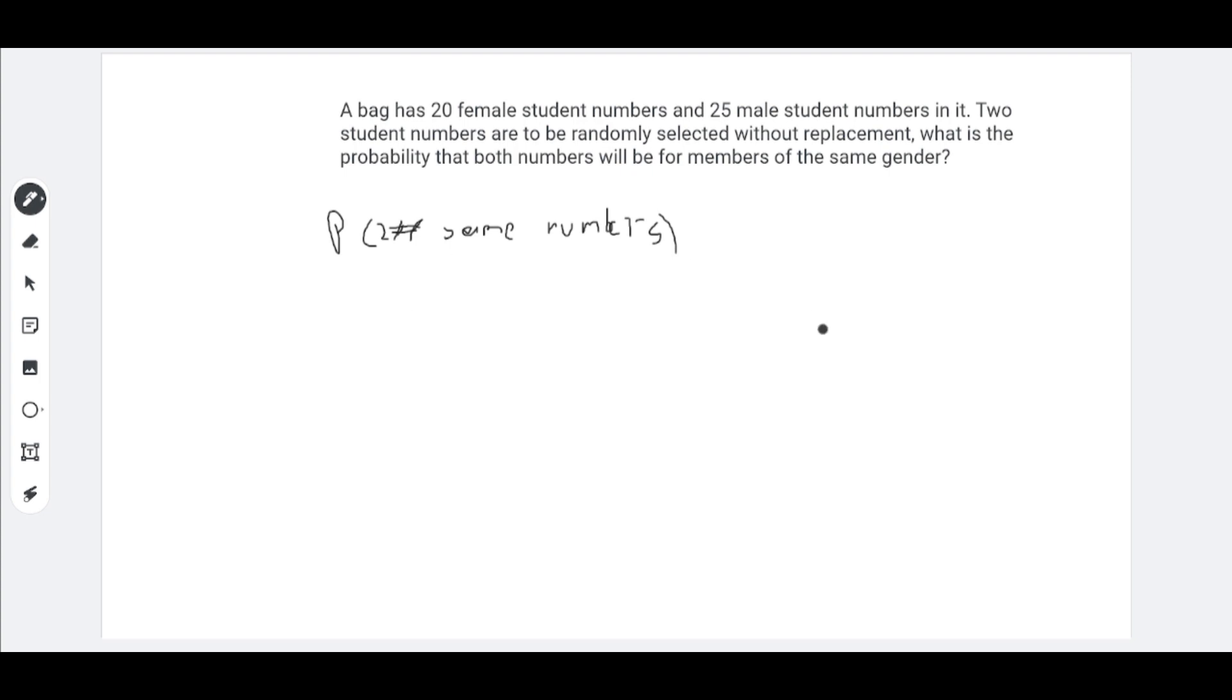By the way, don't mind my writing here. It's just kind of hard to write with a cursor. Okay, now let's get to solving this. So, for a female, we have twenty out of forty-five chances to get a first female number. And then times nineteen out of forty-four chances to get the second female number. So, and then we have to add the male probability. So, twenty-five out of forty-five chances to get the first male number. And twenty-four out of forty-four chances to get the second male number.